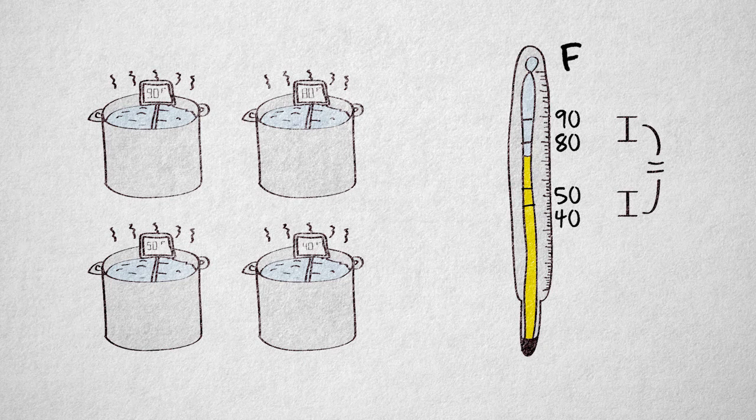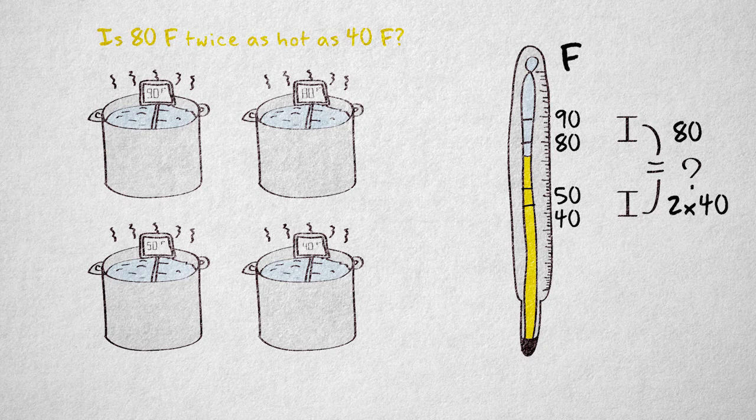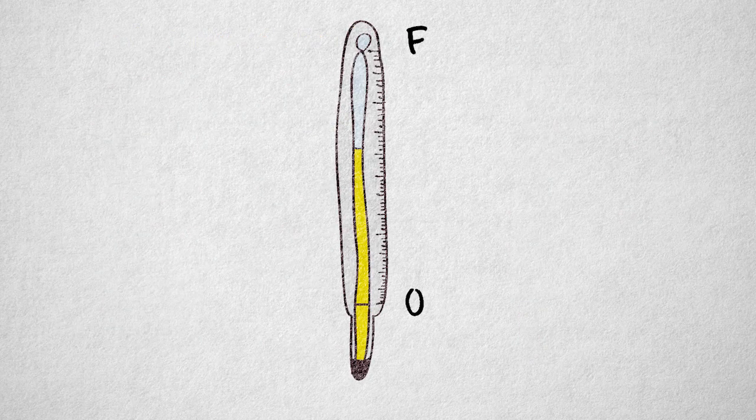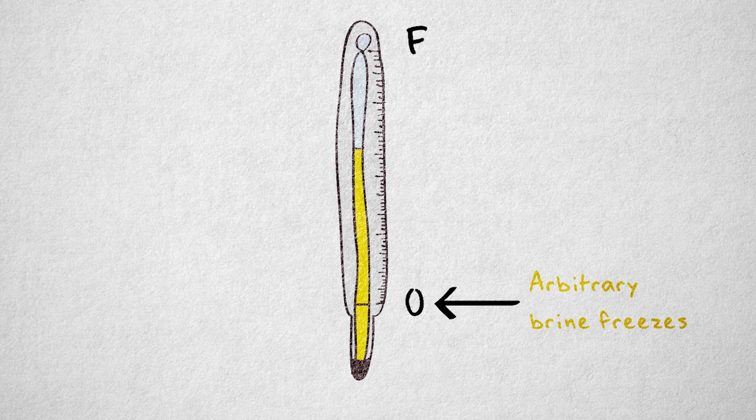We can't say, however, that water at 80 degrees Fahrenheit is twice as hot as water at 40 degrees. This is because the zero point for temperature is arbitrarily defined. The value zero doesn't correspond to the absence of temperature. It corresponds to the temperature required to freeze brine, or salt water. The Celsius scale defines zero as the temperature at which fresh water freezes.